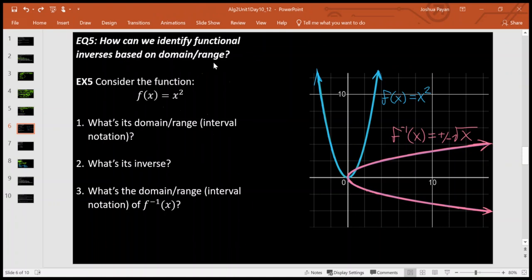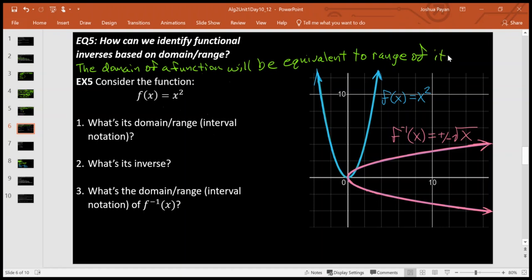Let's go ahead and answer this question we've got posed up here. How we can identify functional inverses based on domain and range is that the domain of a function will be equivalent to the range of its inverse.